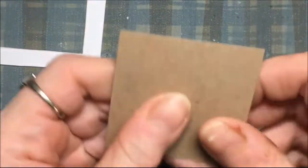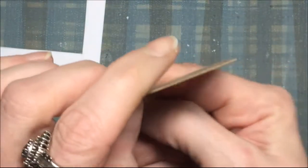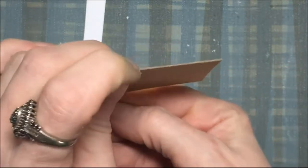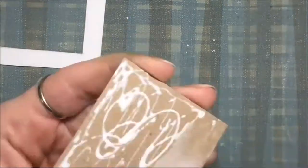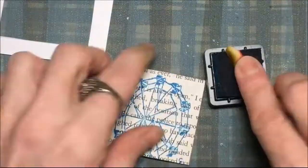I have a scrap piece of cardboard, just some thin cardboard. I'm going to take some liquid adhesive and put it on that cardboard and then I'm going to position my stamped image right on there.